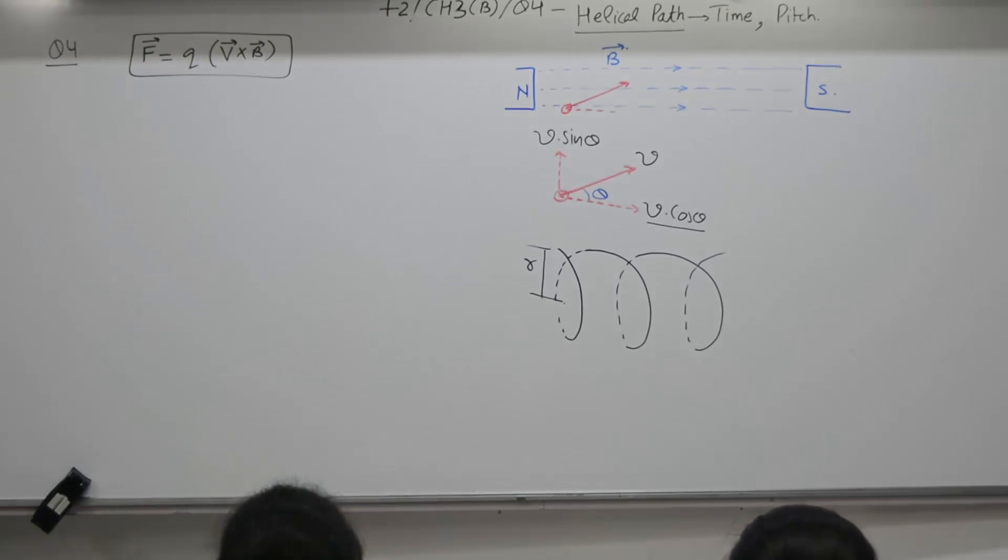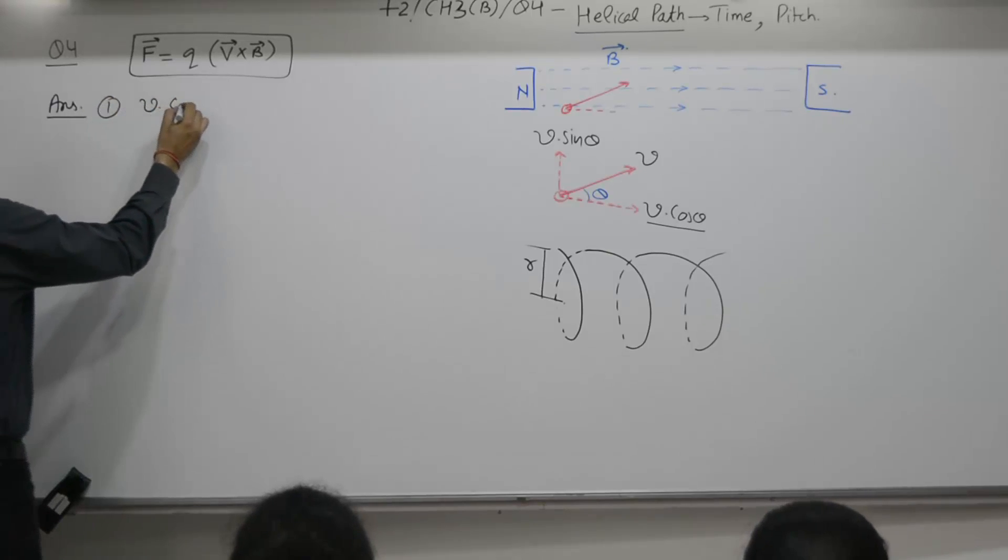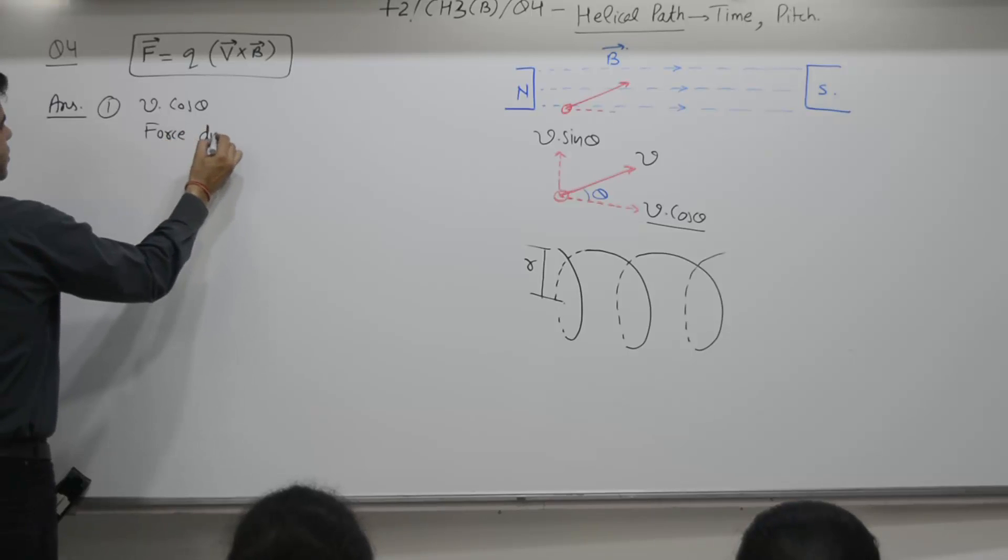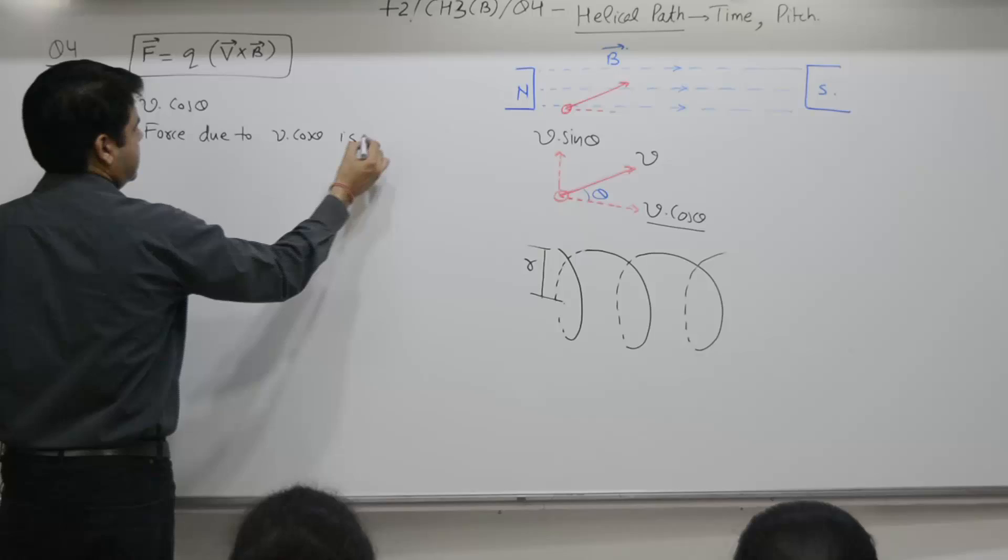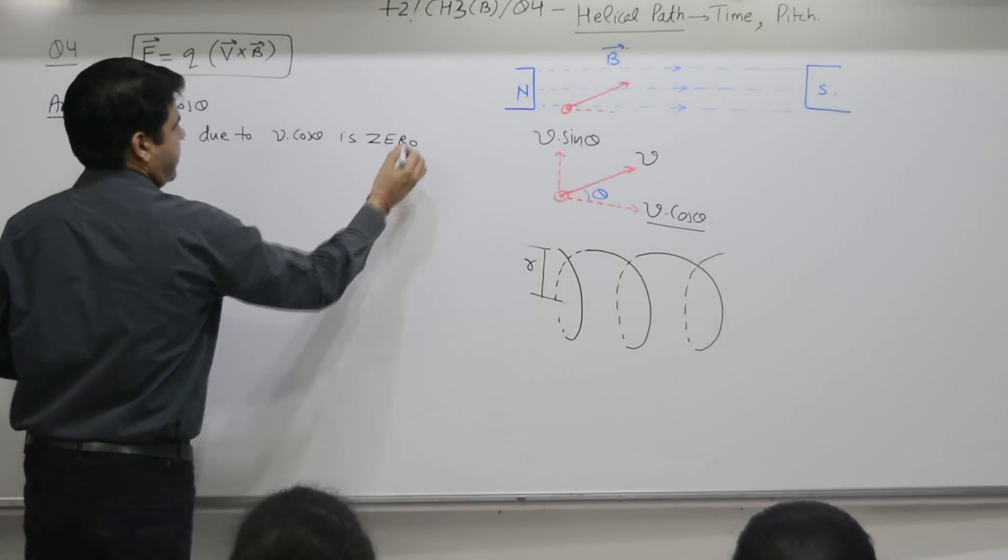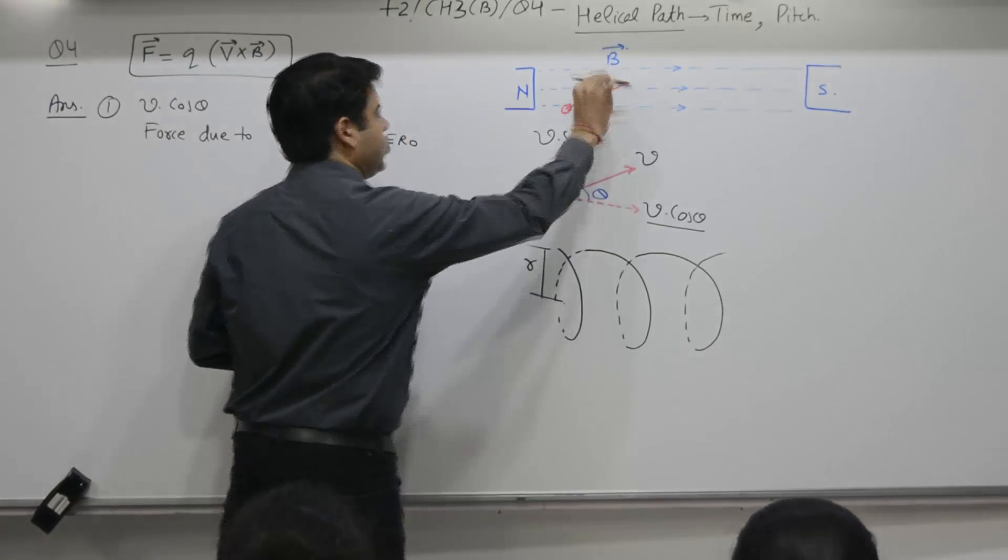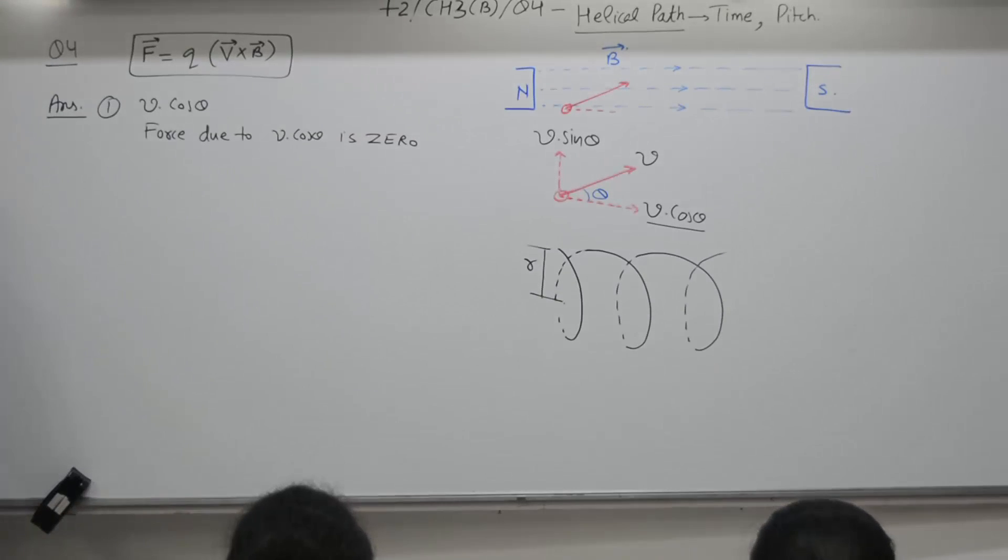Step wise. Horizontal component v cos theta. Force due to v cos theta is 0. Why? Because v cos theta is parallel to B, that is point number 1. So, force acting due to v cos theta is 0. So, no acceleration along x axis, particle will move with a constant speed v cos theta, 1 is answered.